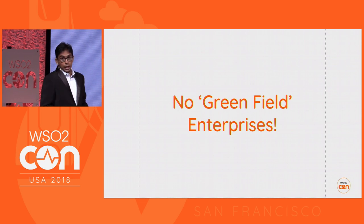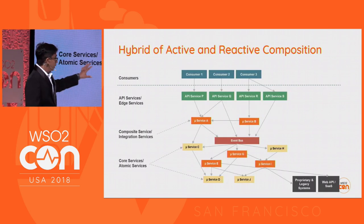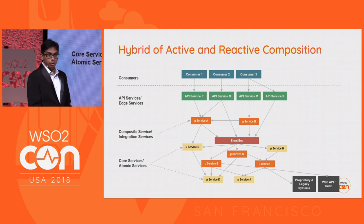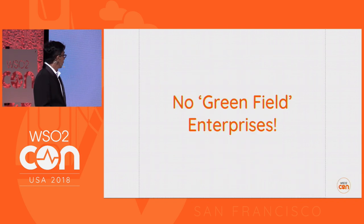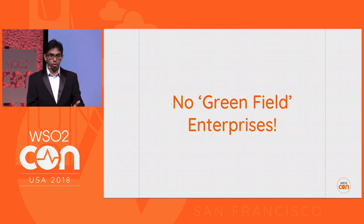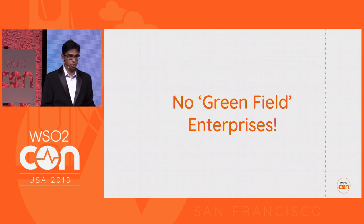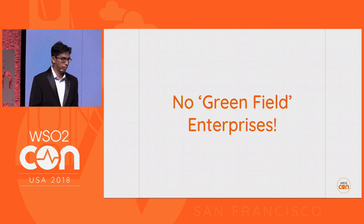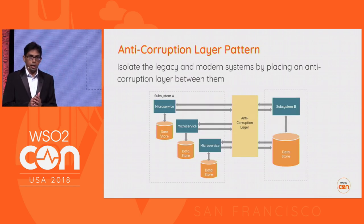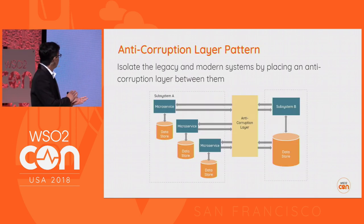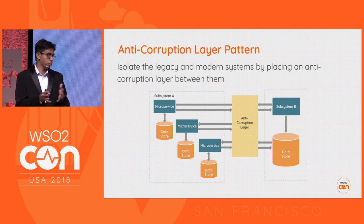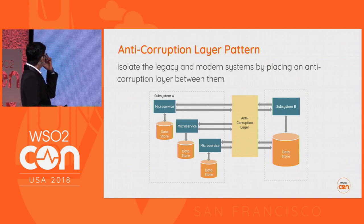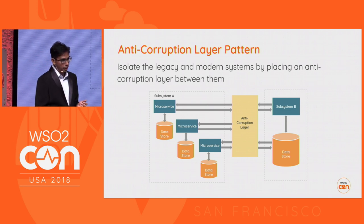When it comes to adapting cloud-native architecture, you always have to deal with existing systems and services. No enterprise is a greenfield enterprise. We can identify several patterns that help you convert your existing conventional architecture to a cloud-native architecture. The anti-corruption layer pattern addresses the scenario where you have two subsystems — one using cloud-native architecture and the other using conventional monolithic architecture.